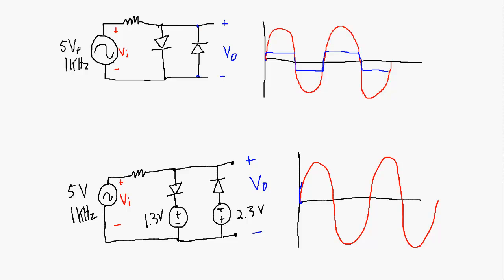On the positive half of the cycle, V out follows V in up until about 2 volts. At that 2-volt point — even though this isn't quite to scale since the peak is 5 volts — the diode becomes forward biased, and there's no more voltage increase at the output because it takes all the current through it.